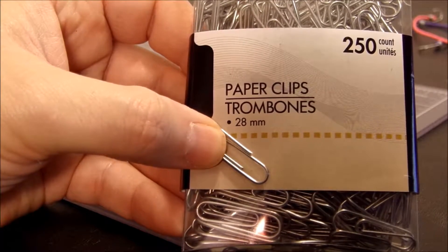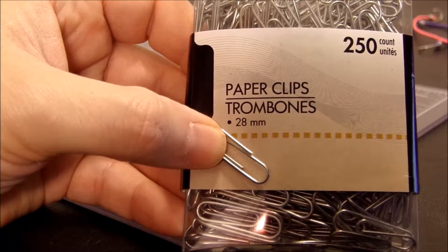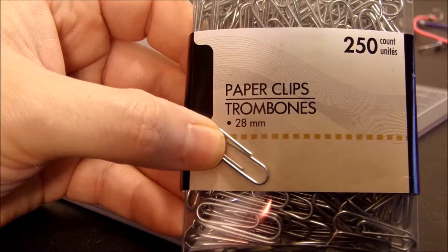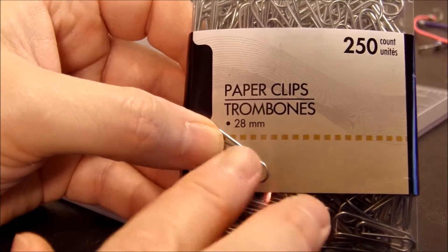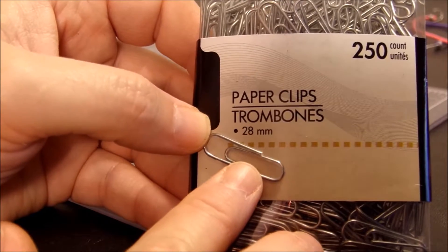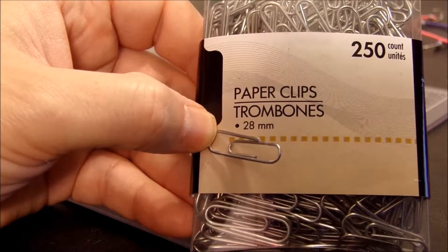The second product you'll need is paper clips. I got these for a buck at the same dollar store. It's 250 of them, 28 millimeter. These will make the hooks for our bungee cords.